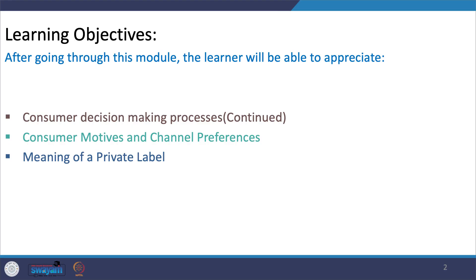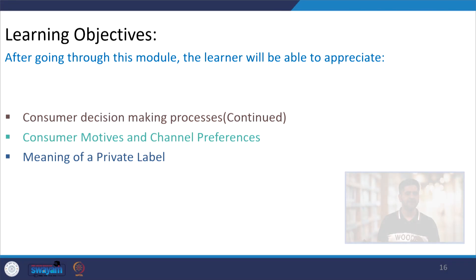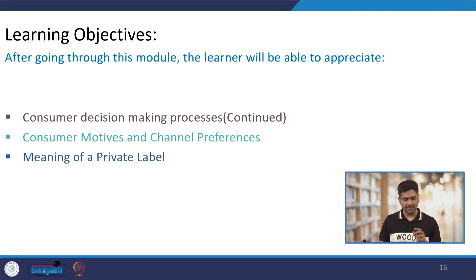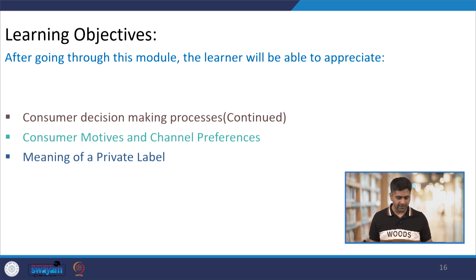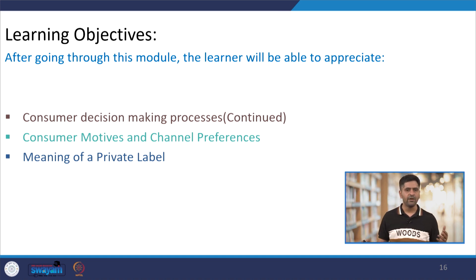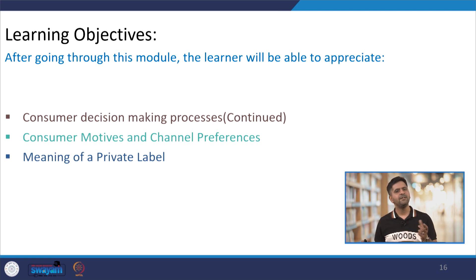In this module we'll be moving ahead with the facets of consumer decision making processes, but the ideology is going to be different. We'll be looking at the paradigms of consumer motives and channel preferences — why would certain consumers prefer online channels or why would certain consumers prefer offline channels. And then we'll finally be getting into the meaning of a private label.